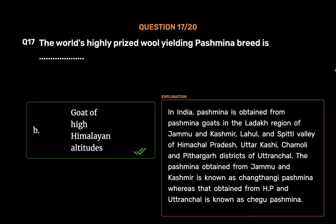In India, Pashmina is obtained from Pashmina goats in the Ladakh region of Jammu and Kashmir, Lahul and Spiti valley of Himachal Pradesh, Uttarkashi, Chamoli and Pithoragarh districts of Uttaranchal. The Pashmina obtained from Jammu and Kashmir is known as Changthangi Pashmina, whereas that obtained from H.P. and Uttaranchal is known as Jagu Pashmina.